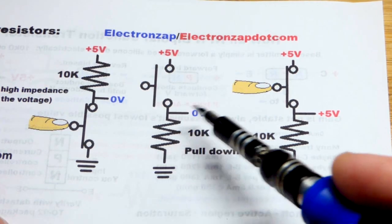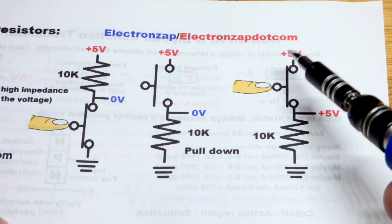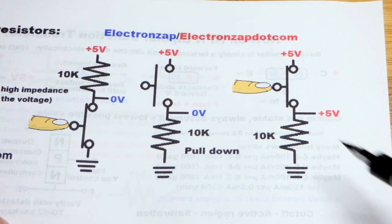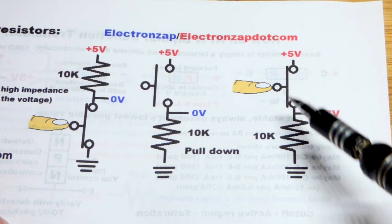And so the pull-down resistor does the same thing but opposite polarity. So it pulls the voltage down until you close the switch, and then you'll have a direct connection to 5 volts, if you're using 5 volts.